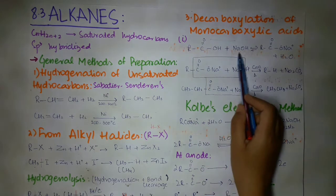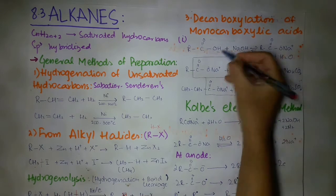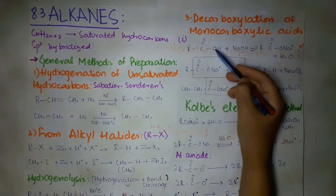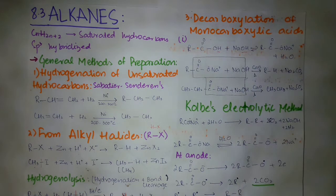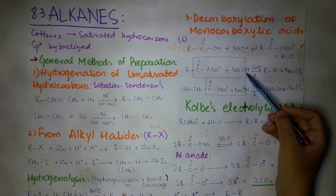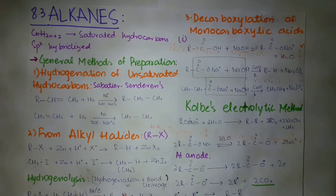We have a carboxylic acid R–COOH. If we combine this acid with a base like sodium hydroxide, water is released from H and OH, leaving O⁻ and Na⁺ which combine to form a salt — the sodium salt of monocarboxylic acid. In this reaction we use this sodium salt and treat it with soda lime. Soda lime is the combination of two things: quick lime (CaO) and caustic soda (NaOH), which are mixed together and dried.